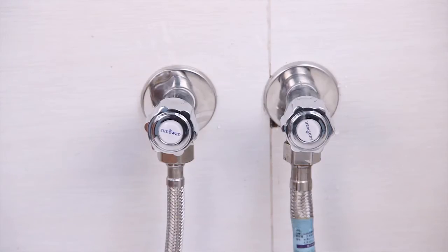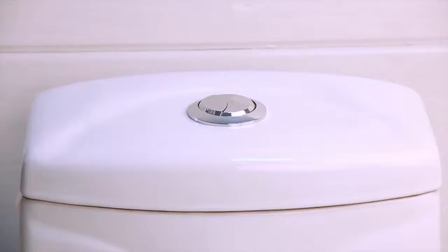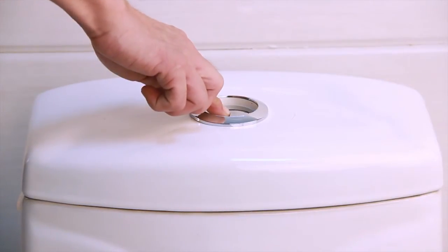First, turn the water off to the toilet by turning the valves clockwise. The valve is closed when no water fills the tank after you flush the toilet.